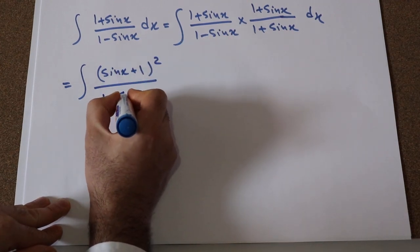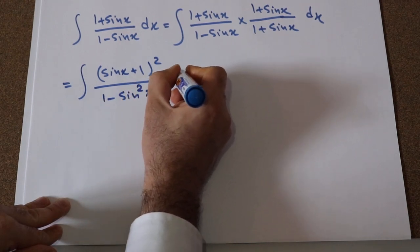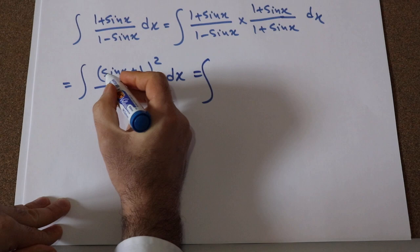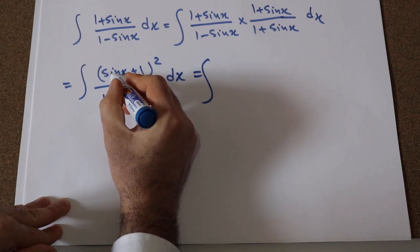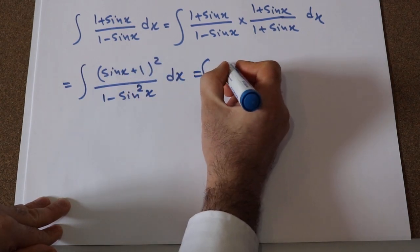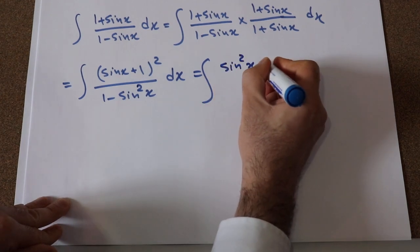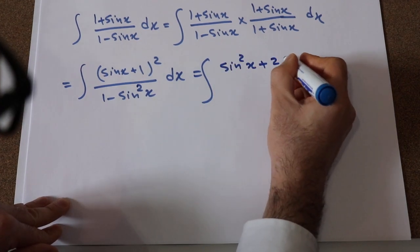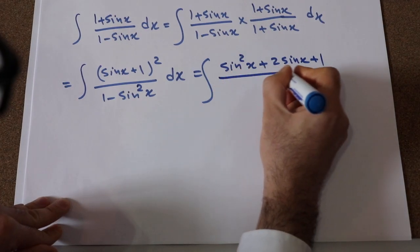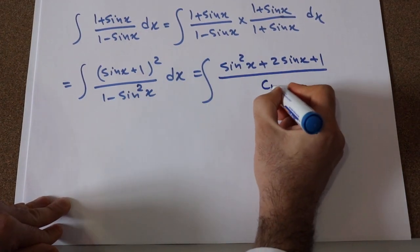The denominator (1 - sin x)(1 + sin x) equals 1 - sin²x dx. You can now expand the numerator: (sin x + 1)² equals sin²x + 2 sin x + 1, divided by 1 - sin²x.